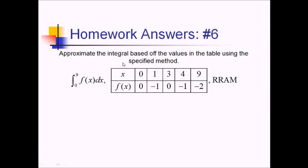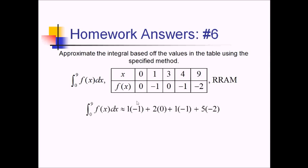For this problem, we're approximating the integral from 0 to 9 using this table of values for f and RRAM. So we're going to be using the right y value for each rectangle. The integral from 0 to 9 is approximately equal to a base of 1 times the height of negative 1. We're picking negative 1 because we're doing RRAM, picking the right side each time. Next we have a base of 2 times the height of 0, base of 1 times the height of negative 1, and a base of 5 times the height of negative 2. Adding all this up: negative 1, 0 doesn't matter, another negative 1, so that's negative 2, plus a negative 10 is negative 12.